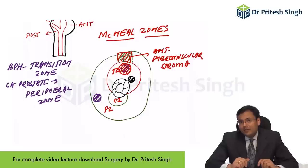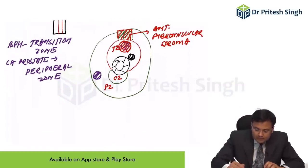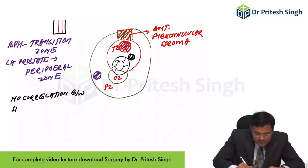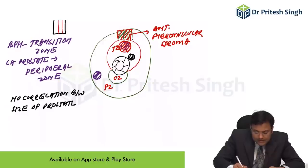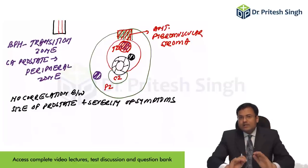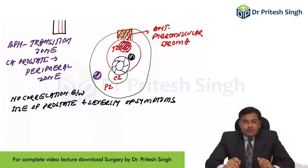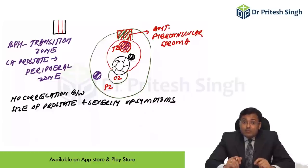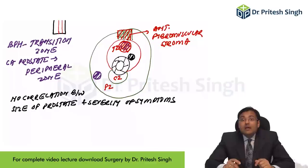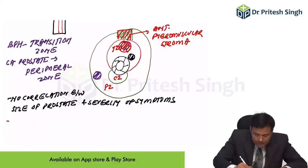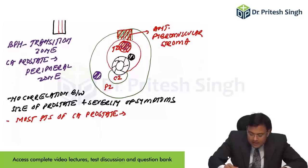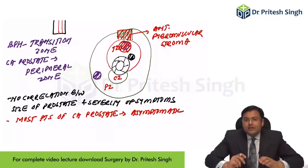If it is a large nodule but located away from the urethra, the patient will not have symptoms. First statement: there is no correlation between size of prostate and severity of symptoms in BPH. Second: the most common site of carcinoma prostate is the peripheral zone, so most patients with carcinoma prostate are asymptomatic in initial stages because there is no close relation of these nodules with the urethra.